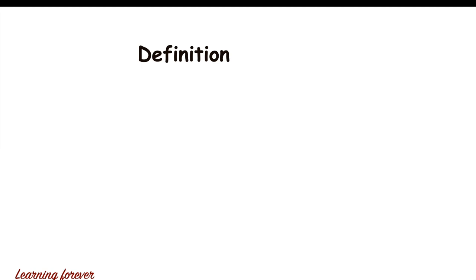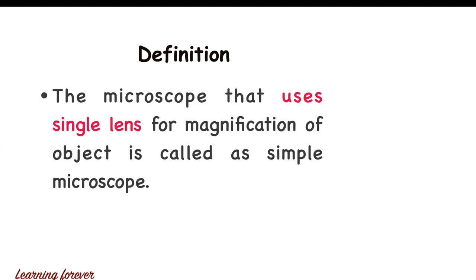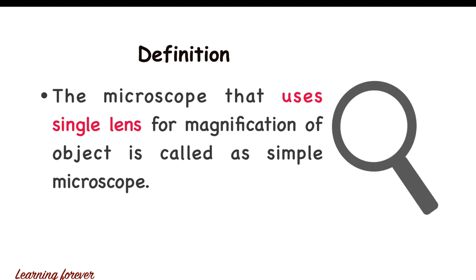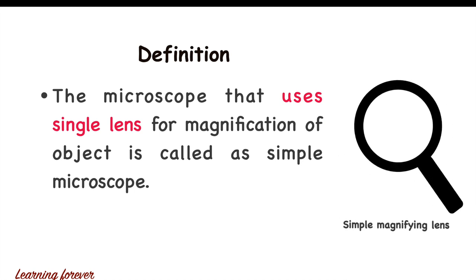First, we will see the definition. The microscope that uses a single lens for magnification of an object is called a simple microscope. So if you are using a simple magnifying lens to observe a small object, it is also called a simple microscope because it uses a single lens.